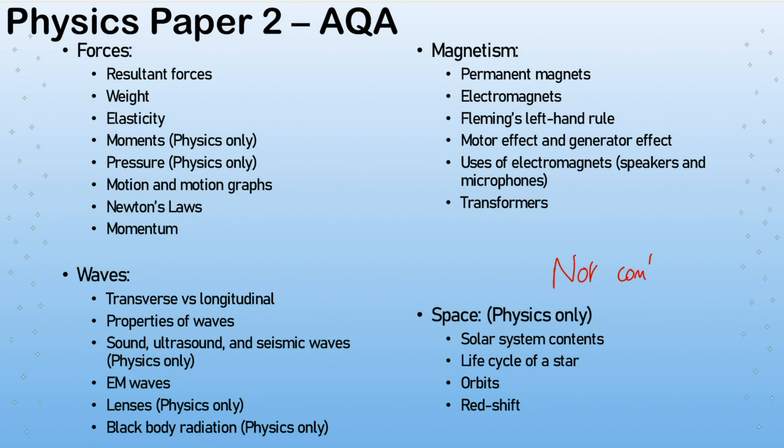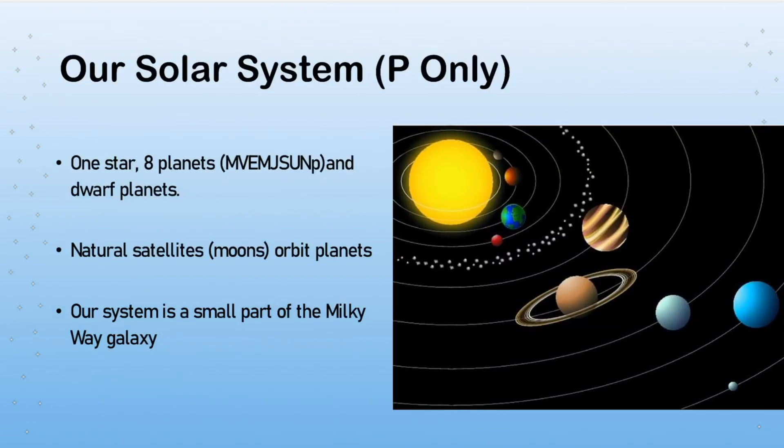I'll say that again, it is not combined science. You've got to make sure you know that and make sure you're not studying it when you don't need to. In this topic we're going to look at a small part of it - it's not a very large topic at all. We have solar system contents, lifecycle of a star, orbits, and the evidence of the Big Bang redshift.